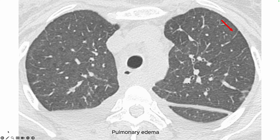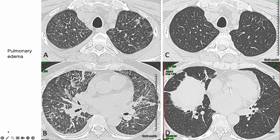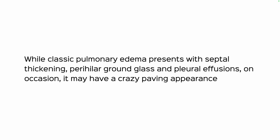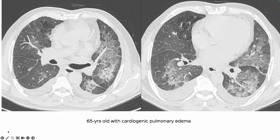Classic pulmonary edema presents with ground glass, pleural effusion, and septal thickening — as seen here with upper lobe septal thickening and perihilar ground glass. Diuretics were given and everything regressed within 36 hours. However, sometimes you can have a crazy paving appearance with cardiogenic pulmonary edema, as in this patient with multifocal crazy paving — though not as diffuse as alveolar proteinosis.